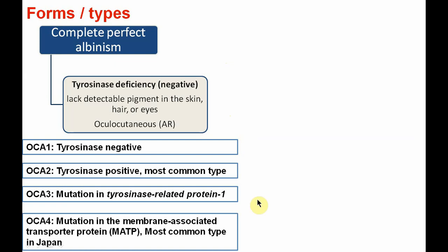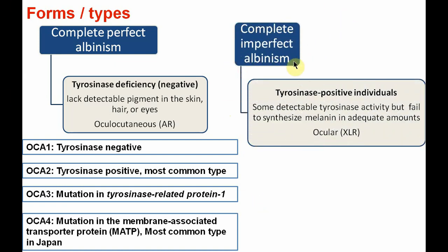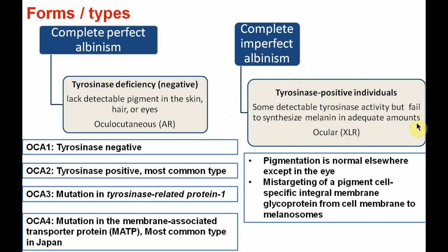Another form is complete imperfect albinism, also considered tyrosinase-positive individuals, where some detectable tyrosinase activity is seen, but they fail to synthesize melanin in adequate amounts. This form is also called ocular albinism, inherited as X-linked recessive. The characteristic here is that pigmentation is normal elsewhere except in the eye, and there is a problem in the mistargeting of a pigment cell-specific integral membrane glycoprotein, which is a G-protein coupled protein, from the cell membrane to the melanosomes.